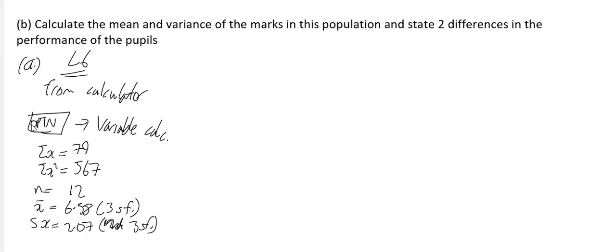Now, if it asks you to find the variance as it has in this case, you could square that but it's not very accurate. On the Classpad calculator, it actually gives you S squared x, so just use this value to 3 sig figs. It is 4.27 to 3 sig figs.